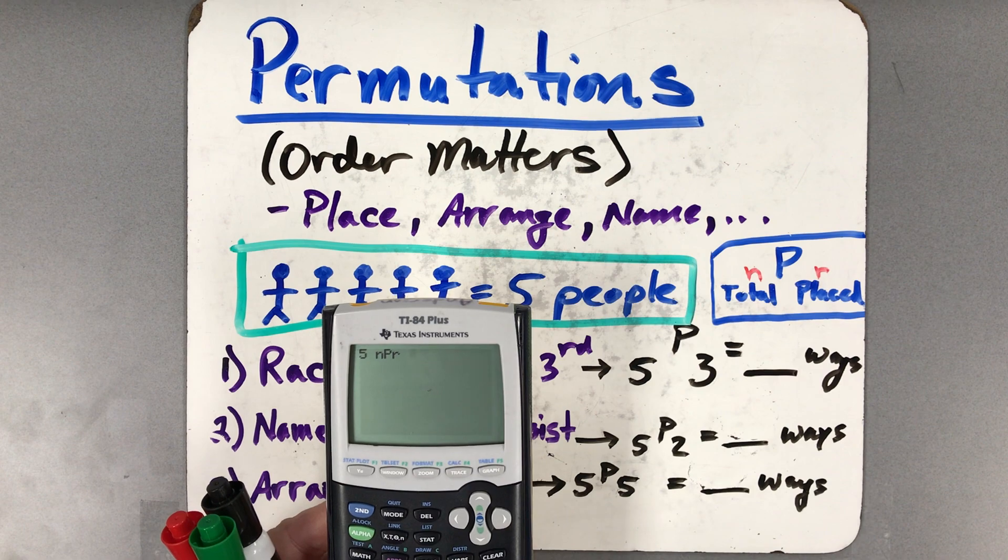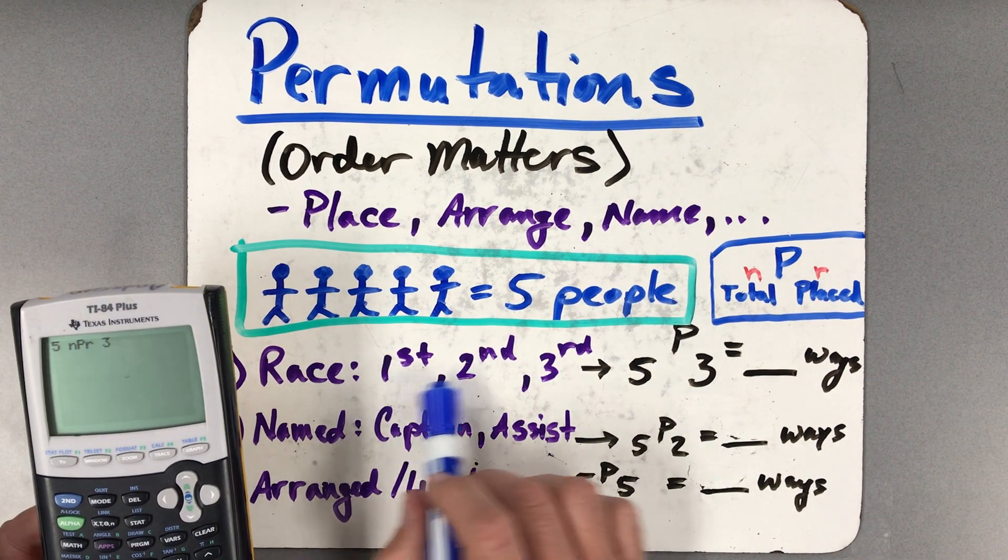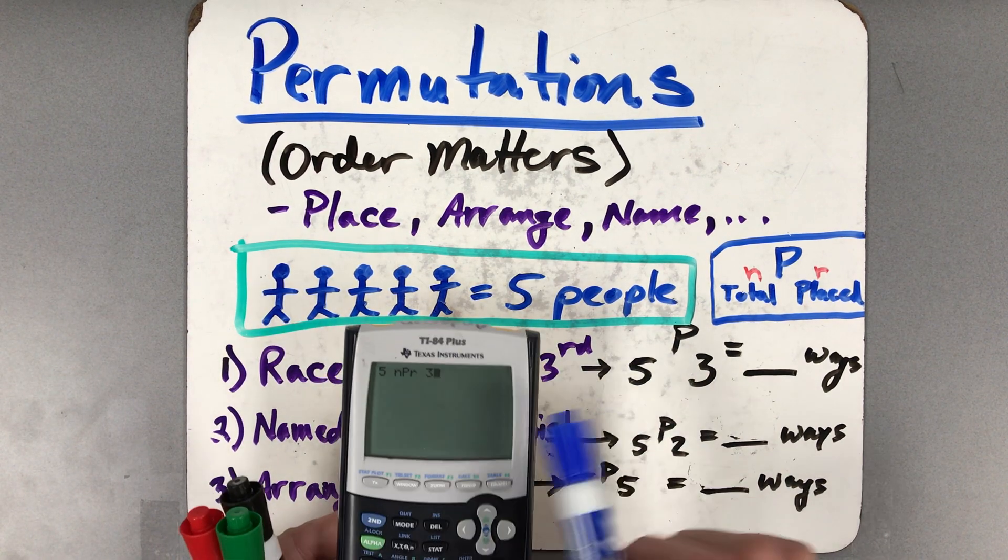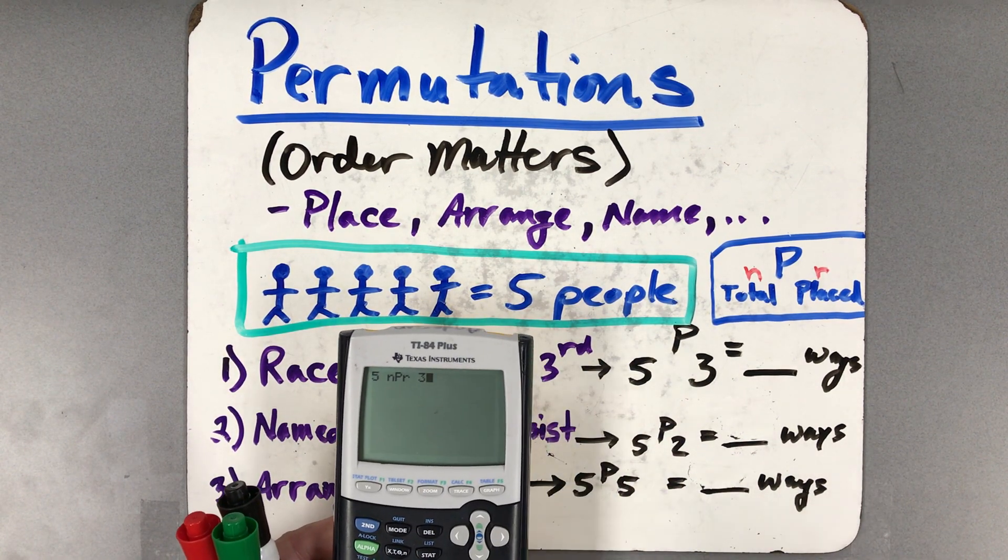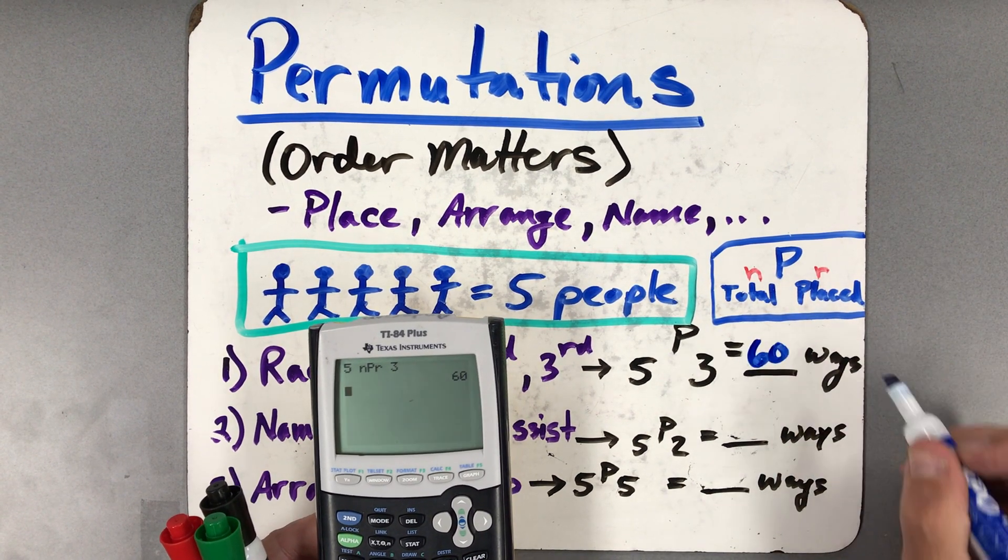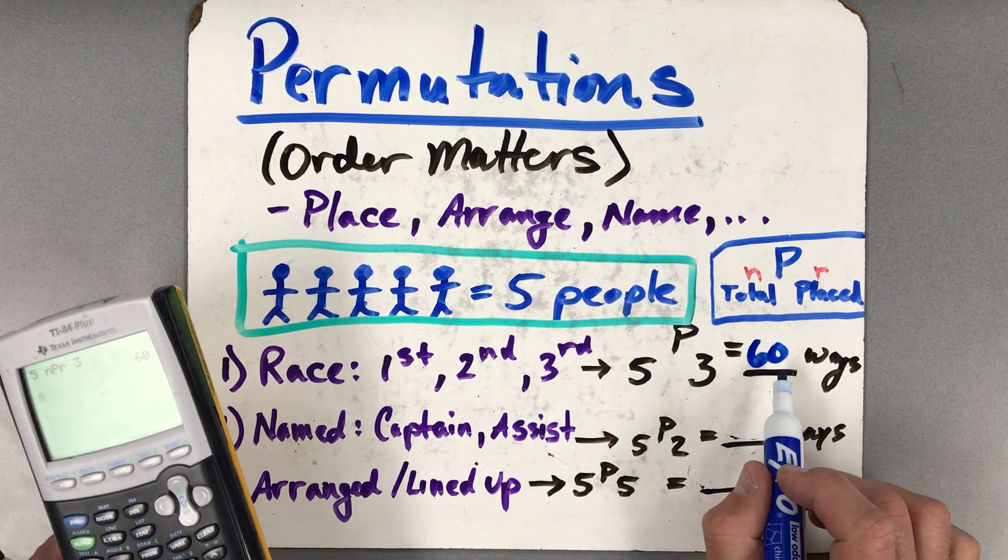So I've got five nPr, and then I type in three, because I have three things that I want to figure out that I'm going to put in order: first, second, and third. I'm taking three out of the total five and trying to put them in order into three spots. This is the notation that it looks like. So when I hit enter, there are 60 ways to do that. So 60 ways to order these people in first, second, and third.